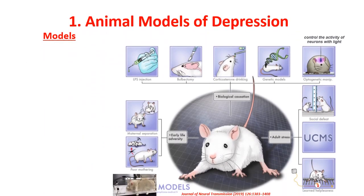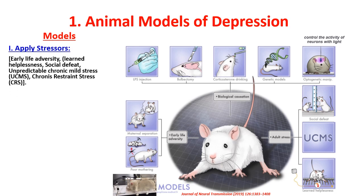One CNS model is the model of depression. There are six methods that can be used for depression in animals. The first method is to apply stressors. If it's early in life, such as maternal separation — for example, three hours of separation per day — or social defeat, or learned helplessness. Applied for four or six weeks, mostly six weeks.